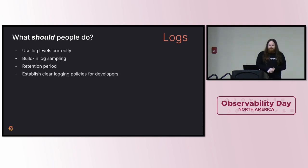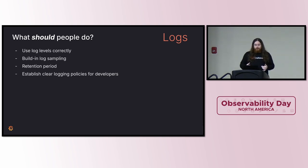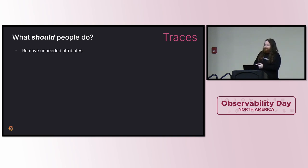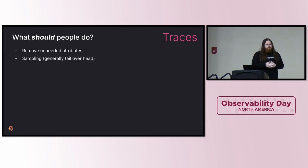The fourth log strategy is establishing clear logging policies for developers. Some companies have rigid policies on what developers are allowed to log — a log line must provide a meaningful level of information useful for diagnosing a problem; if it's superfluous or routinely ignored, it shouldn't be a log line at all. On the tracing side: remove unneeded attributes. People often add tons of extra span and resource attributes, increasing span size. Since tracing is such a high-volume data stream, the effect multiplies very quickly. Strip attributes down to only what you query by and need in results.